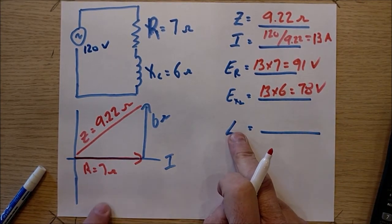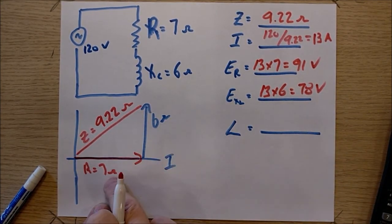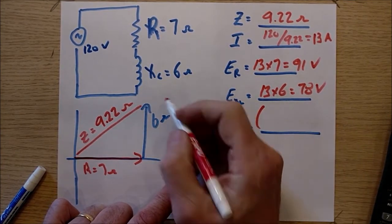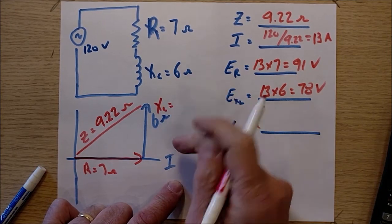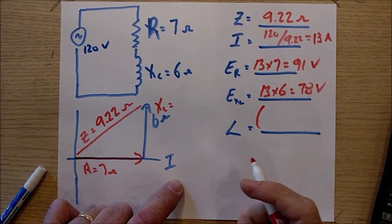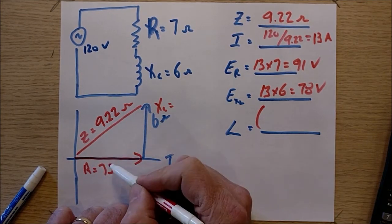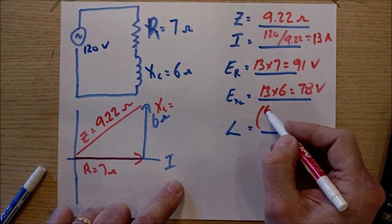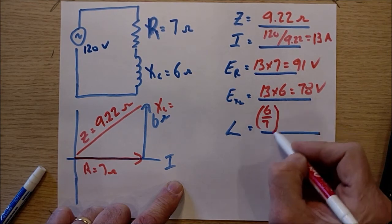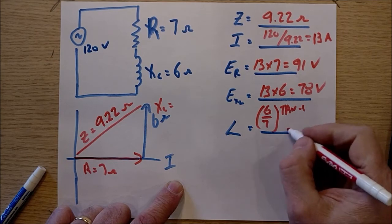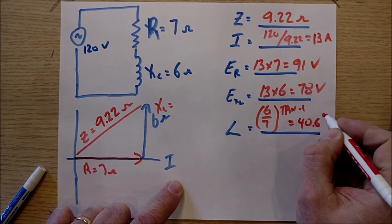The phase angle is going to be opposite over adjacent inverse tan. So opposite is always going to be XL, guys. Because XL is always going to be the vertical side. We're always interested in this angle right down here. So it's opposite over adjacent inverse tan. It's going to be 6 over 7. 6 divided by 7 equals, shift tan equals 40.6 degrees.